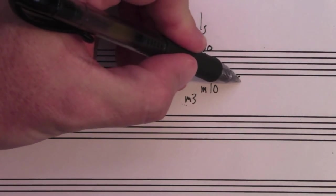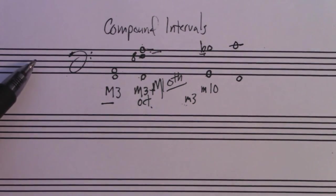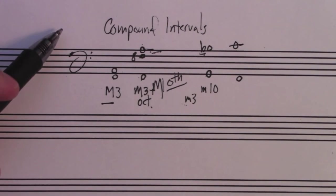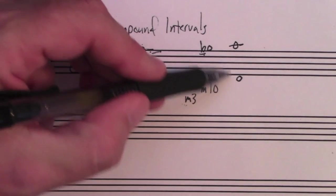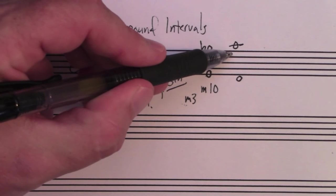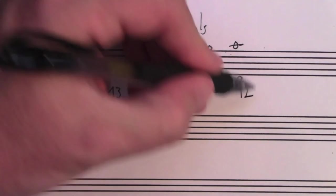What about this? F to C. What is that interval? Well, F to F is an octave. That's eight, nine, ten, eleven. That's a twelfth.